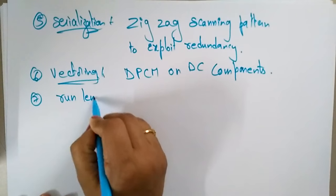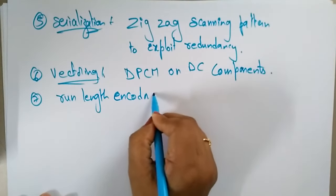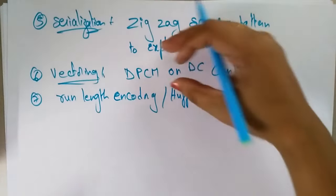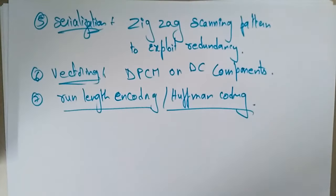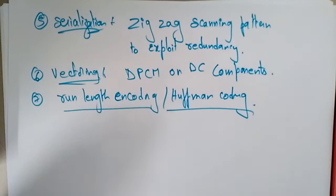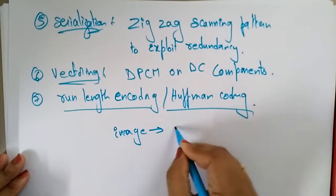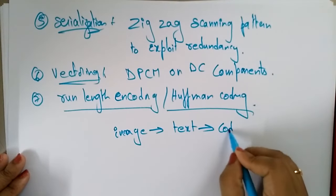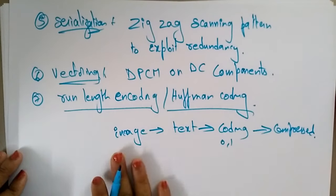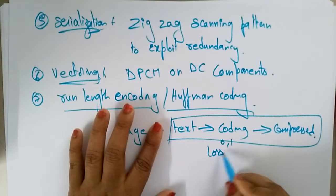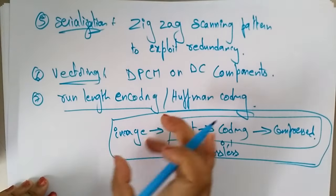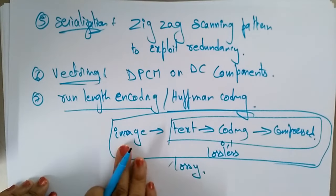After the zigzag pattern and DPCM, you apply run-length encoding or Huffman coding — whichever technique is applicable. You already know how to apply run-length encoding. The image data needs to be converted into text, then into zeros and ones, and then compressed. This is a lossy technique, so the image is changed through all these six steps to convert it into a compressed form.